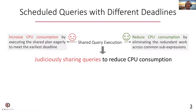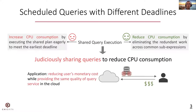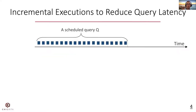This is particularly useful in today's Pay Per Use model, where we can reduce users' monetary cost while providing the same quality of service. Let me explain why shared query execution can increase CPU consumption. We represent the deadline of a query as the latency goal, which is defined as the max allowed time between when all data arrives and when the result is returned to users.